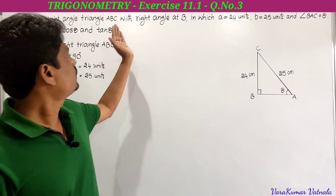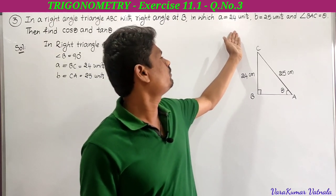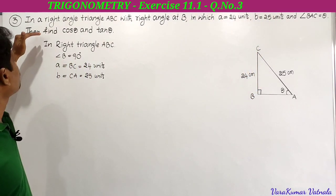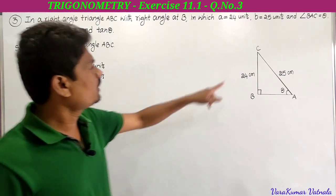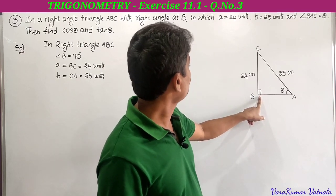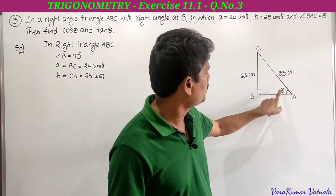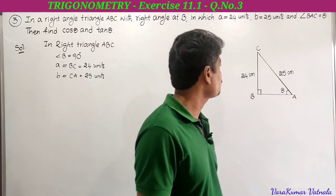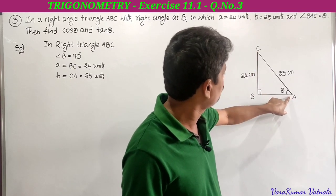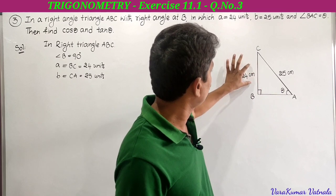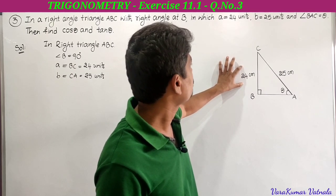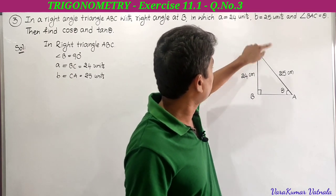Third problem in exercise 11.1: find in a right angle triangle ABC with right angle at B, where small a equals 24 units, small b equals 25 units, and angle BAC equals theta. Find cos theta and tan theta. Small a is the side opposite to angle A, which is BC equals 24 units. Small b is opposite to angle B, which is CA equals 25 units.